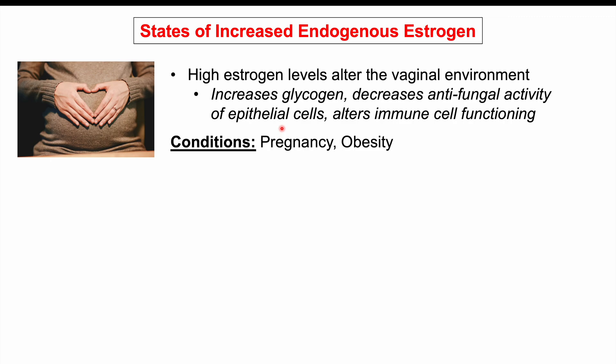Conditions that lead to increased endogenous estrogen include pregnancy. Pregnancy can lead to high levels of estrogen and can also increase glycogen content in the vaginal cavity. Another state of increased endogenous estrogen production is obesity. In obesity we have more adipose tissue, and adipose tissue can lead to the production of estrogen.